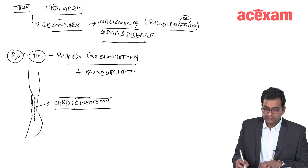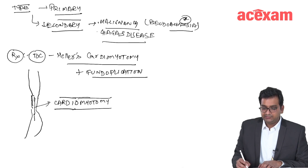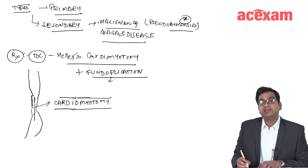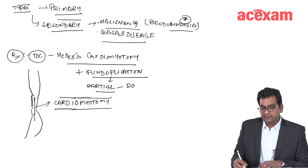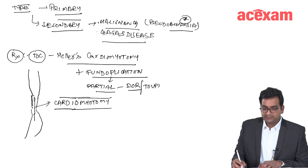The fundoplications preferred after cardiomyotomy are partial fundoplications — generally the Dor fundoplication or Toupet fundoplication are commonly preferred in achalasia cardia.